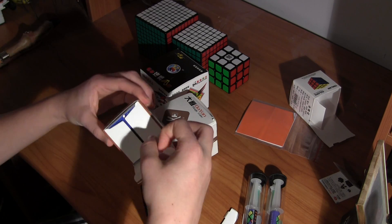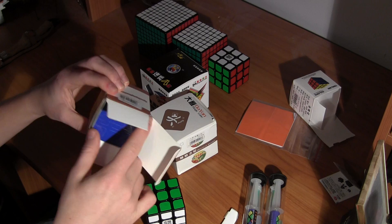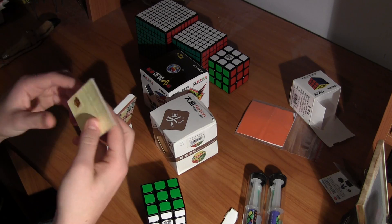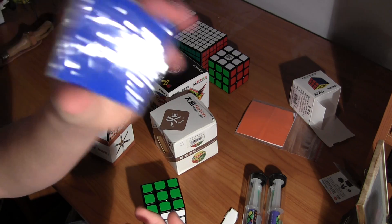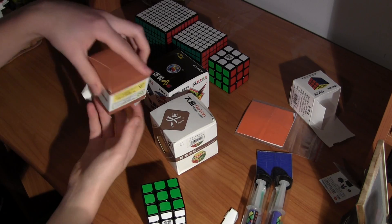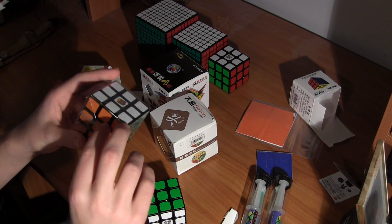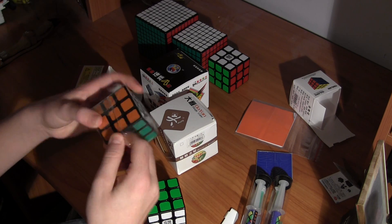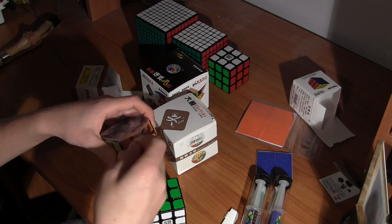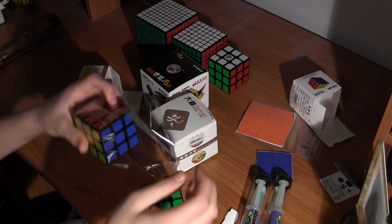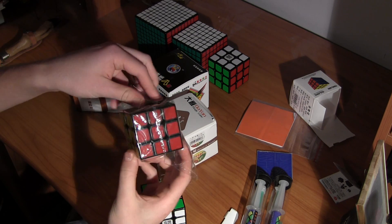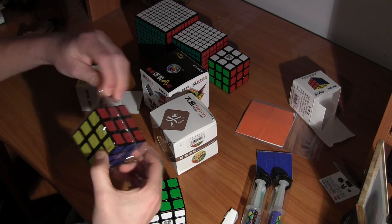And here, now the Gans 3. With some extra stickers. That's cool. Here's the cube in a plastic thing. Okay. Get out there.